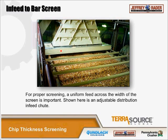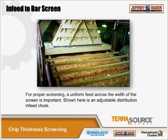You can also use a star feeder above the bar screen, or a distributing screw where chips are sent to the middle and distributed to both sides with a variable opening on the bottom of the screw. You can also run a screw from the end and go across. The advantage of the screw is it limits the amount of height needed between the infeed and the top of the bar screen.